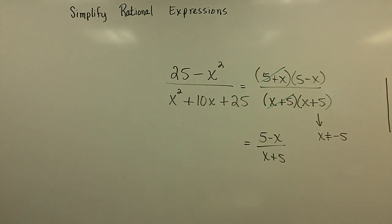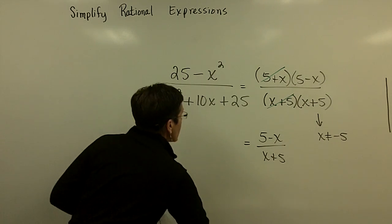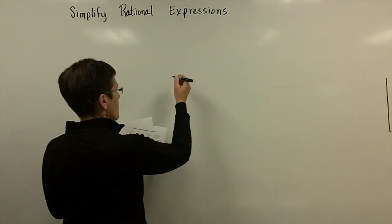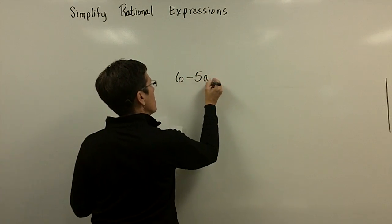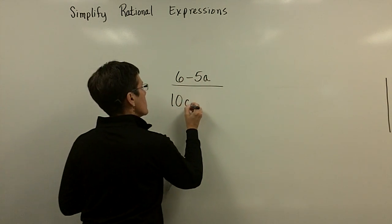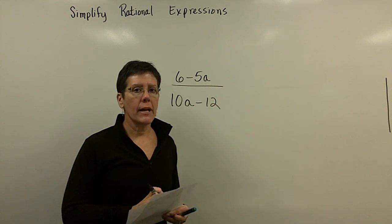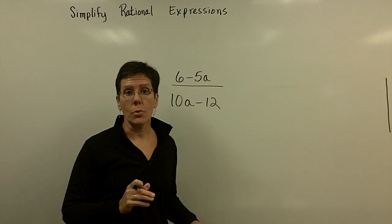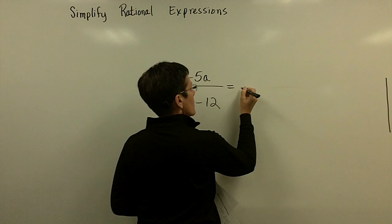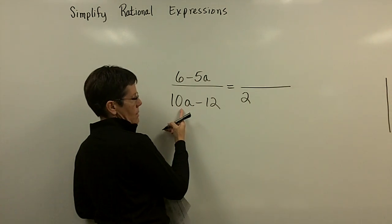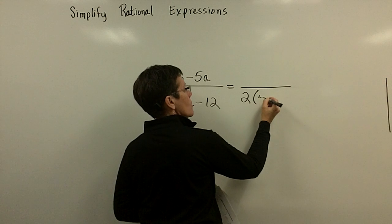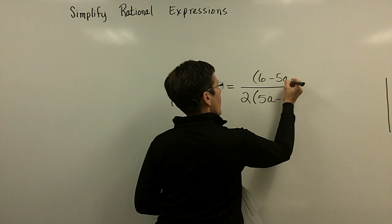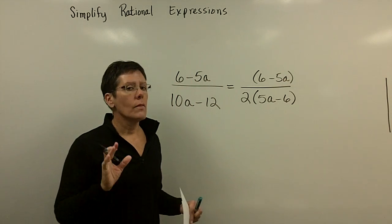Let's hope, I'm going to grab a new pen. Let's hope that this next problem has some opposites. I do believe it does. So, again, remember that you have to factor everything before you can do any reducing. So, nothing can be done in this numerator. But the denominator has a 2 that will come out of it. I'm going to come on over here and write 2 times 5a minus 6. So, in parentheses, 5a minus 6. And upstairs, I have 6 minus 5a.